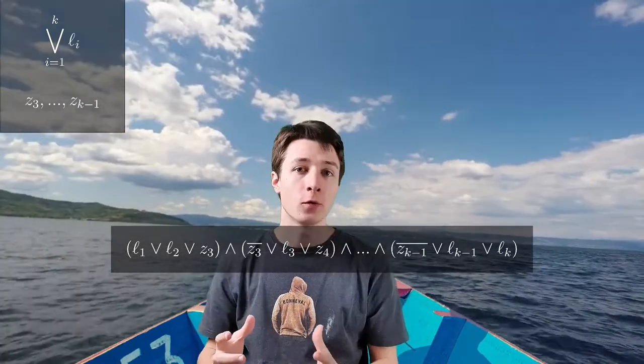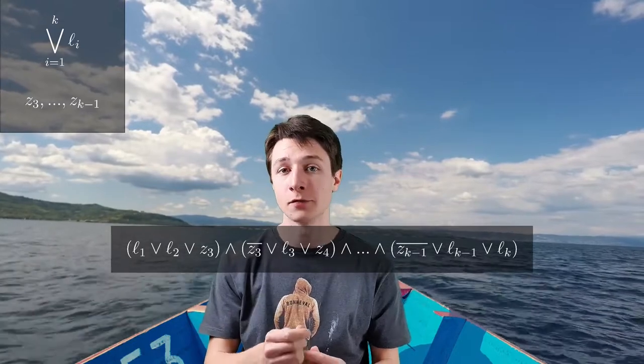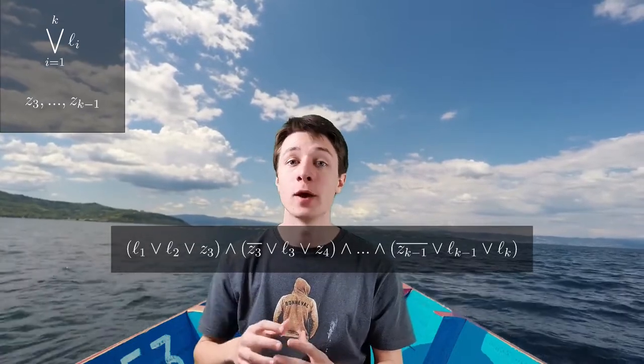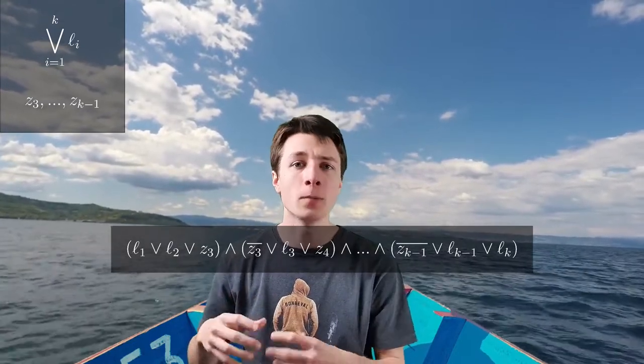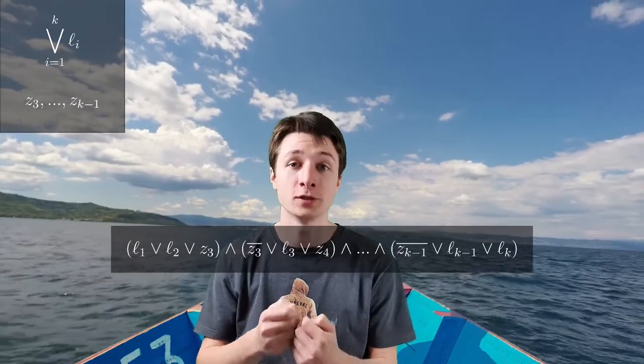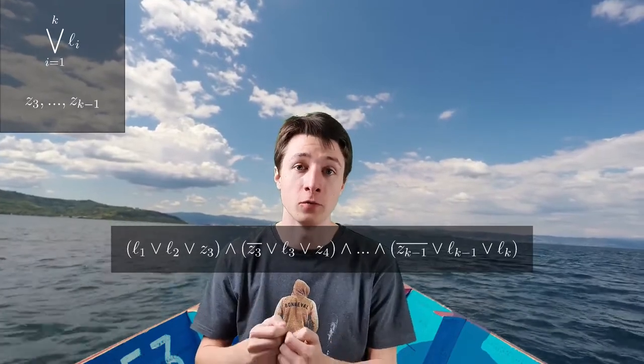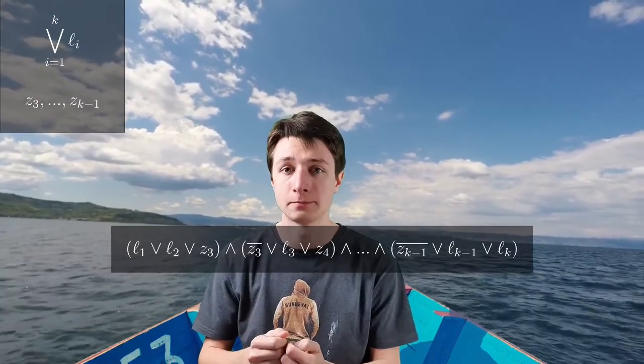One can add k-3 variables called z_3 to z_{k-1} such that z_i will indicate that no variable l_j is true for j strictly smaller than i. More precisely, if at least one of the l_i is true, then it is possible to find a configuration of the z_i such that the following formula is true. Therefore it is possible to transform an instance of SAT into an instance of 3SAT by applying this process on all the disjunctions of the SAT formula, and this transformation is easy enough to confirm that SAT is easier than 3SAT.